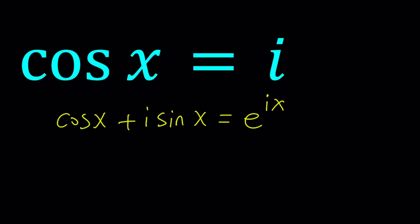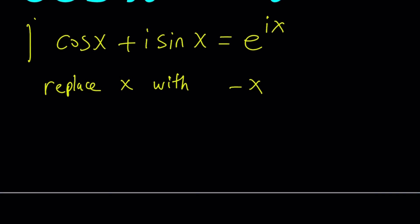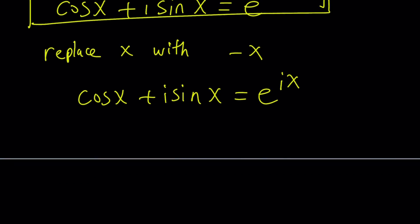We can go ahead and replace x with something. Since I want to get rid of sine x, I think it makes sense if I replace x with negative x. Okay, replace x with negative x. And that's going to give you something that you can use. First of all, let's copy the first equation.